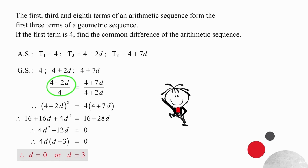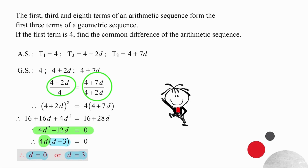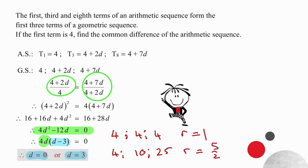If we divide the second term by the first term we get the ratio, and dividing the third term by the second term gives the same ratio. Equating the ratios gives us a rather complicated equation. Manipulating it into standard form — where the right side equals zero — and taking out the highest common factor of 4d, leaves us with a factor of d minus 3. We get two solutions: d equals 0 or d equals 3. Substituting d equal to 0 gives terms 4, 4, and 4 — a geometric sequence with ratio 1. Substituting d equals 3 gives term values of 4, 10, and 25, with a common ratio of 5 over 2.